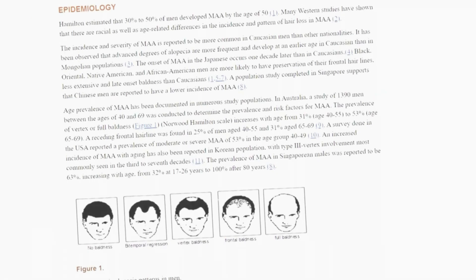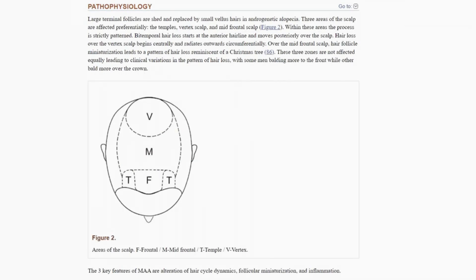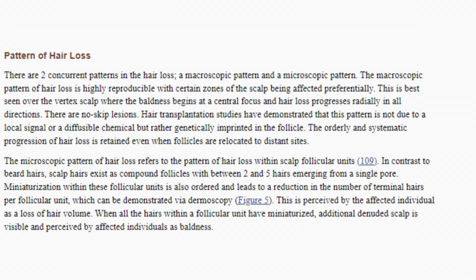Now that we have the description of what happens to the hair of people who have androgenetic alopecia, we need to understand what is going on in the anagen to telogen ratio. Pay very close attention. If you have androgenetic alopecia, instead of your hair follicles on your scalp spending 3 to 7 years in continuous growth, it may shorten this growth phase from years and eventually to months.